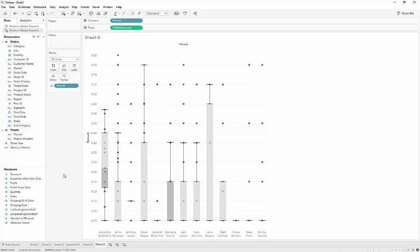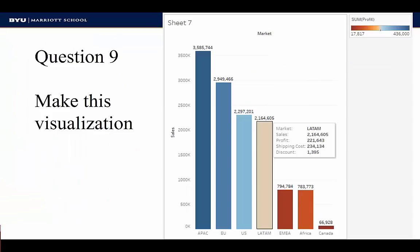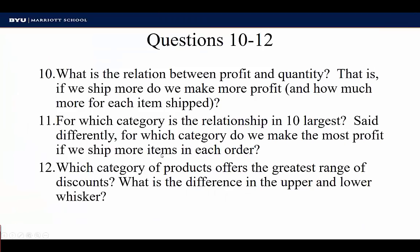We're ready to try a few more questions. First, what is the relationship between profit and quantity — that is, if we ship more, do we make more profit, and how much more for each item shipped? Second, for which category is that relationship largest — for which category do we make the most additional profit when we ship more items in each order? And finally, which category of products offers the greatest range of discounts, and what is the difference between the upper and lower whisker? Go ahead and pause the video and see if you can answer each one.